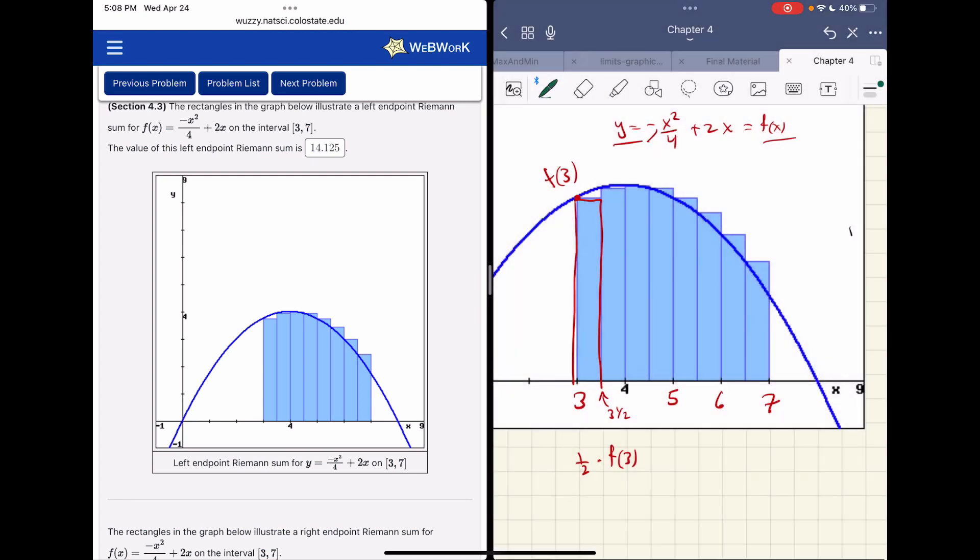So the area of this first rectangle, well, right here is 3 and a half, so the area is base times height, 1 half times f of 3. The area of the next rectangle, this height is f of 3 and a half. So my next is base times height, 1 half times f of 3.5. And you do this over and over again.